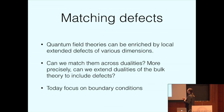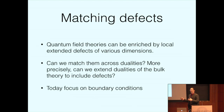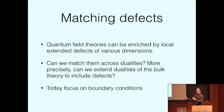Quantum field theories can be enriched by defects like boundary conditions, interfaces, line defects, or surface defects—extended ways to deform a QFT by local modifications along some submanifold of spacetime. These defects play a hybrid role: on one hand they can be thought of as an extension of the notion of local operator, and on the other they often have as much structure and richness as lower-dimensional quantum field theories. It's better to think of them as a way to enrich your theory, adding extra structure subject to many constraints.